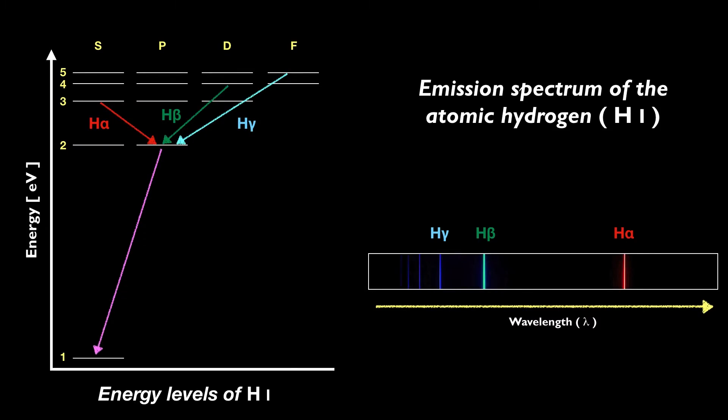So yes, for studying astrophysics we also need plenty of atomic, nuclear and quantum physics. Eventually, the electron will reach the ground state by jumping to level 1. If a transition happens from level 2, the electron will emit a Lyman-alpha photon in the ultraviolet, at 1216 Angstroms. However, although nebulae are mainly made of hydrogen, they also have other elements — helium, oxygen, carbon, nitrogen, sulfur, neon, iron.